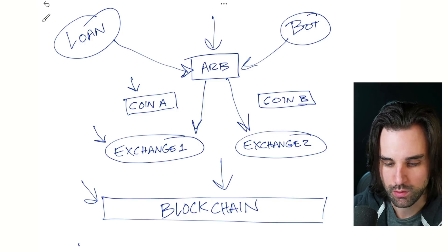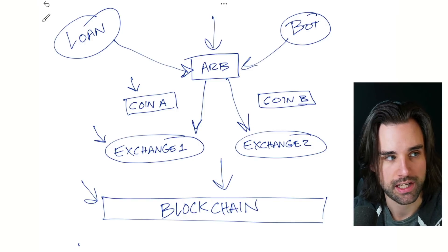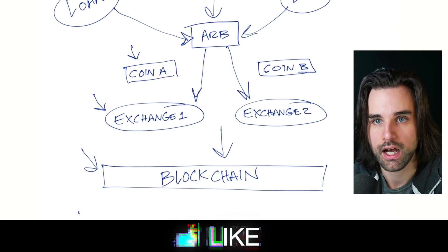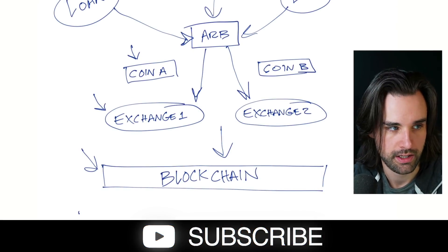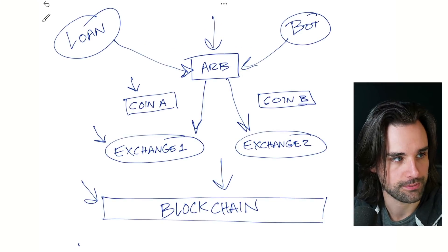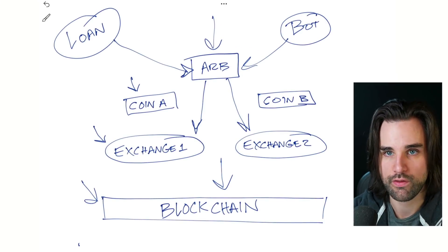The last thing you need is a bot. This essentially is what watches the blockchain and actually checks on the cryptocurrency prices across these different exchanges. When they fall out of sync, you can essentially trigger your smart contract to take out the loan, buy on one exchange and sell on the other. That's an overview of how it works.